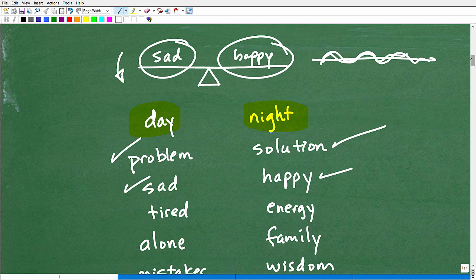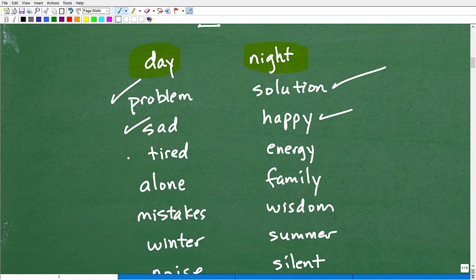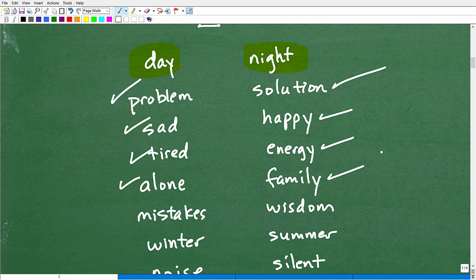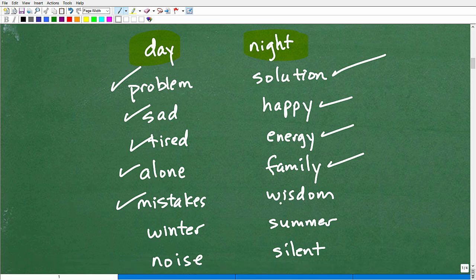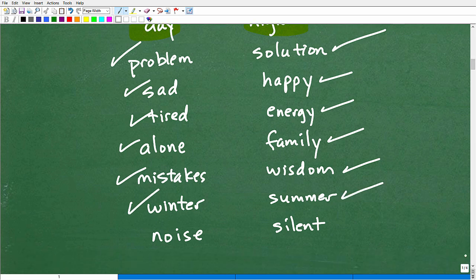And you just think about these principles. Sometimes we're tired. Sometimes we have energy. Sometimes we're alone. Other times we're with family and friends. That we're not lonely. Or we make mistakes. Yes, you will make mistakes in life. I can guarantee that. But guess what? Oftentimes, we learn from our mistakes. And if we're not learning from our mistakes, we're not gaining wisdom. Every year, there's going to be a winter, and there's going to be a summer. Cold and hot. Sometimes it's going to be noisy. Sometimes it's going to be silent.